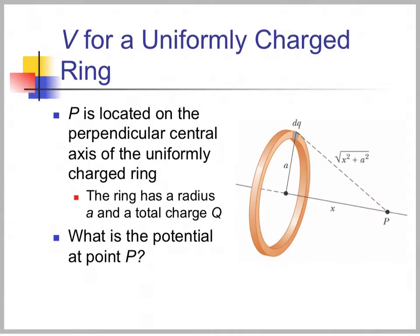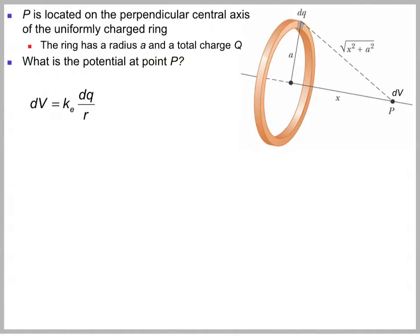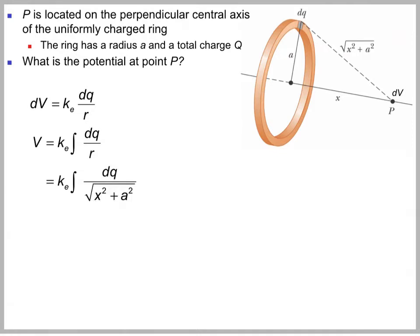Let's look at a couple of examples. We found the electric field for a ring — let's look at the potential for a uniformly charged ring. P is located perpendicularly on the central axis of this uniformly charged ring with total charge Q. We start by finding a little bit of potential due to a little bit of charge. V is equal to k times the integral of dq over r, or dq over the square root of x squared plus a squared.